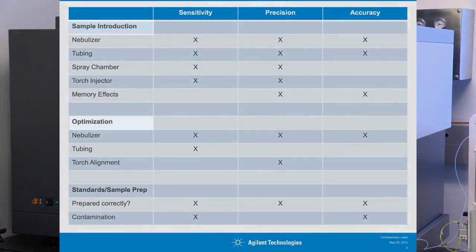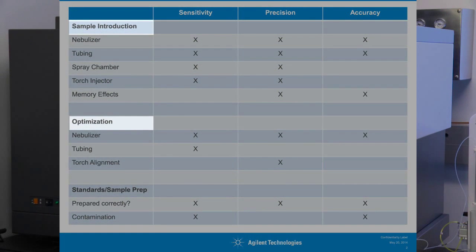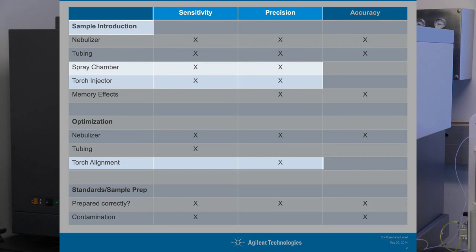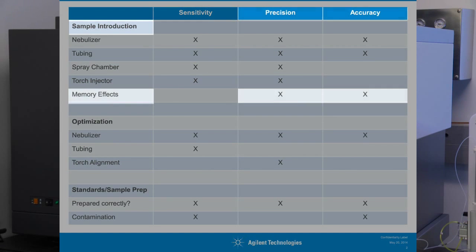First, we'll break down sample introduction and optimization. If we look at the components in sample introduction, you can see issues with your nebulizer can affect sensitivity, precision, and accuracy. The same applies for your pump tubing. We can also see that the spray chamber and torch injector can affect sensitivity and precision. Memory effects can also affect precision and accuracy.